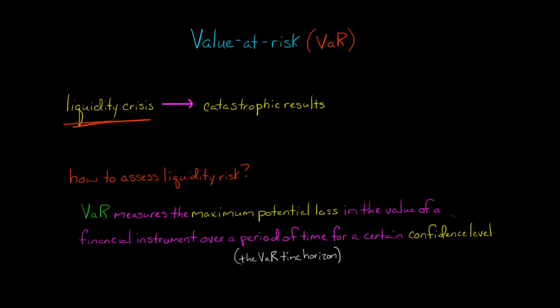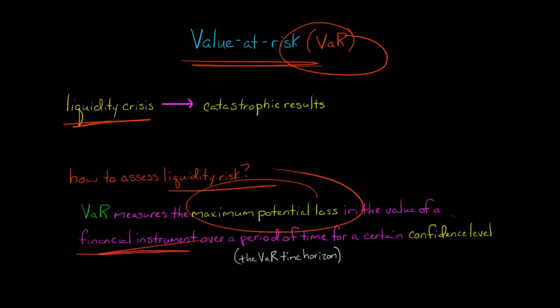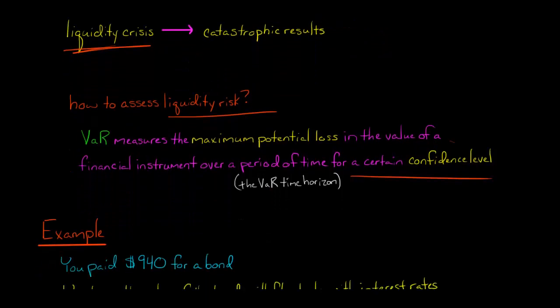So the question is, how do we measure liquidity risk? How do we assess this? We can use something called value at risk, or VAR. VAR measures the maximum potential loss in the value of a financial instrument over a certain period of time, which is called the VAR time horizon, for a certain confidence level which is set by the bank when it's doing its analysis.